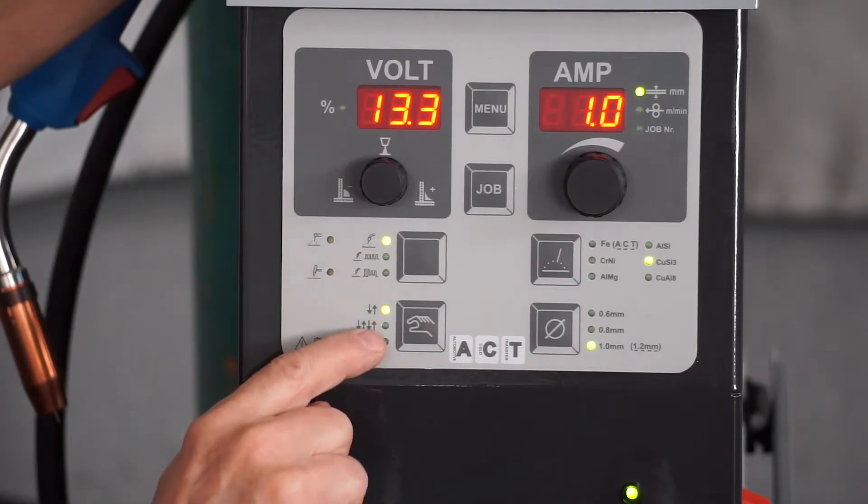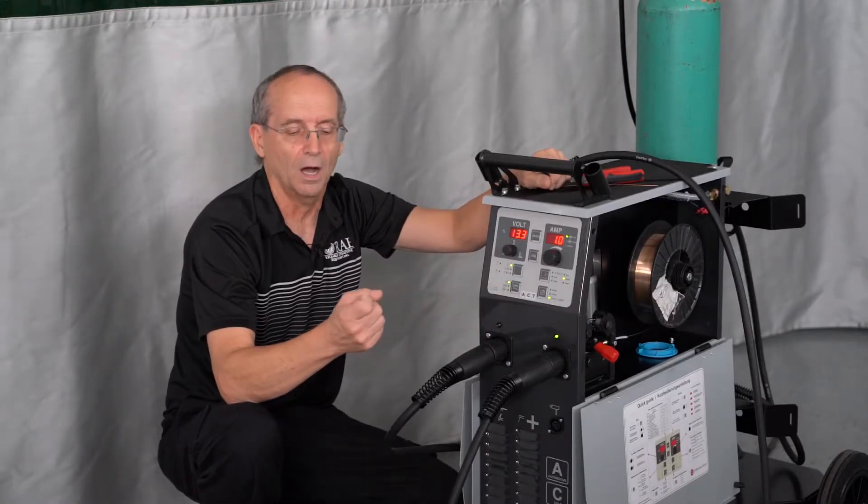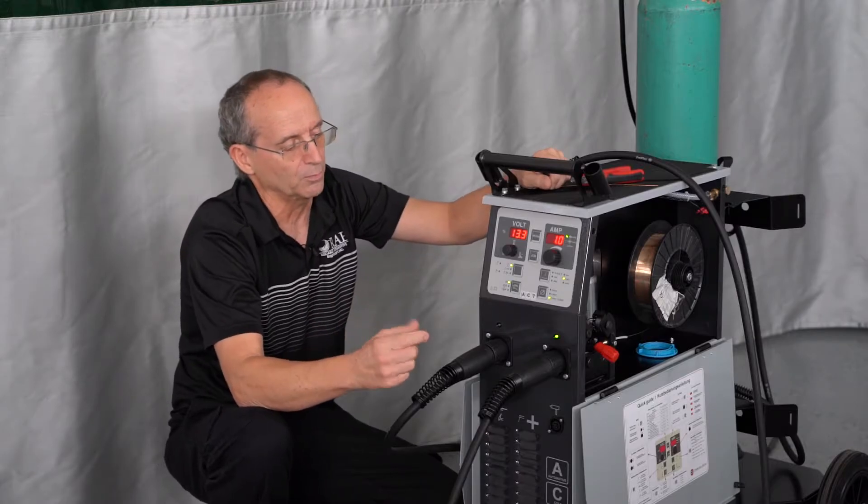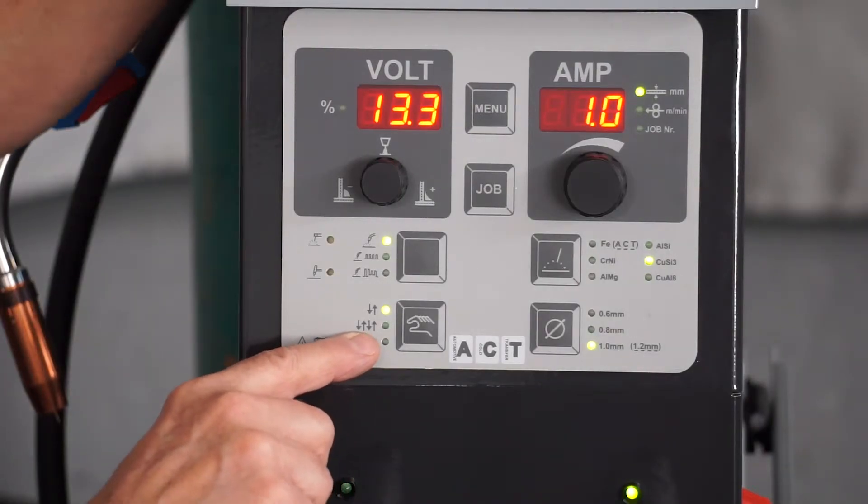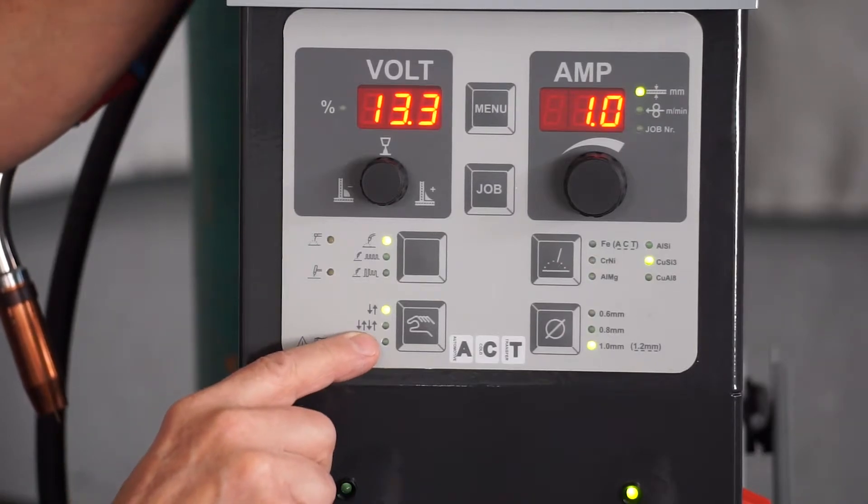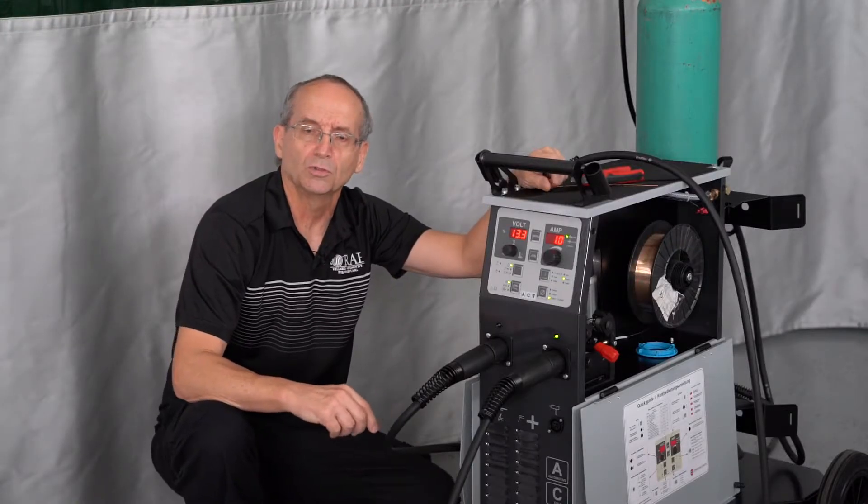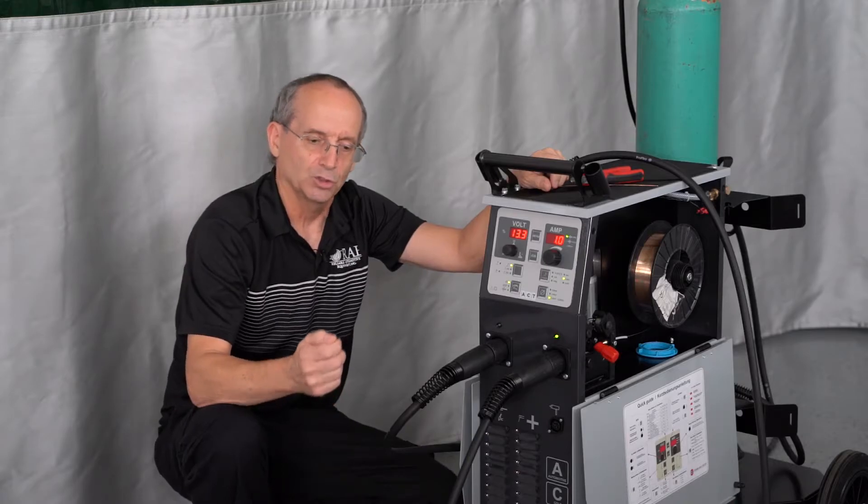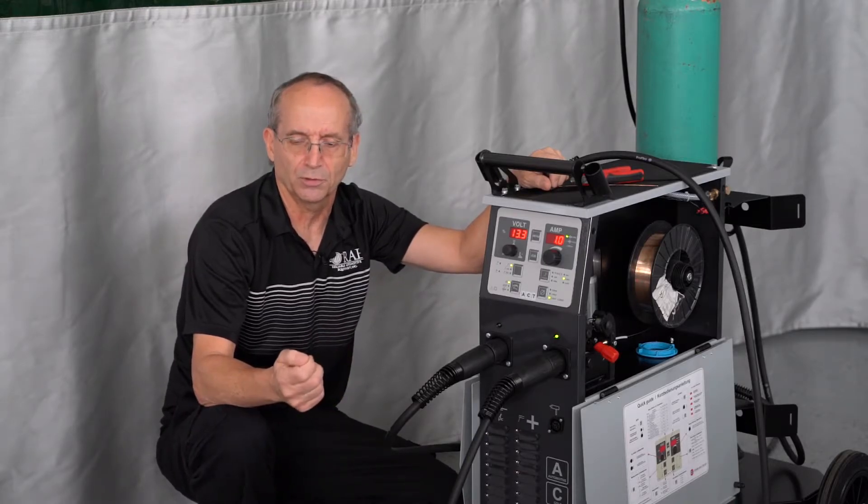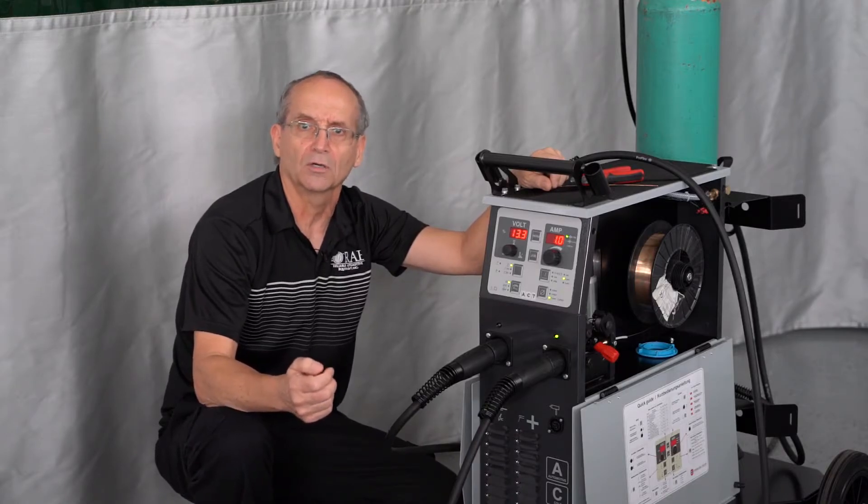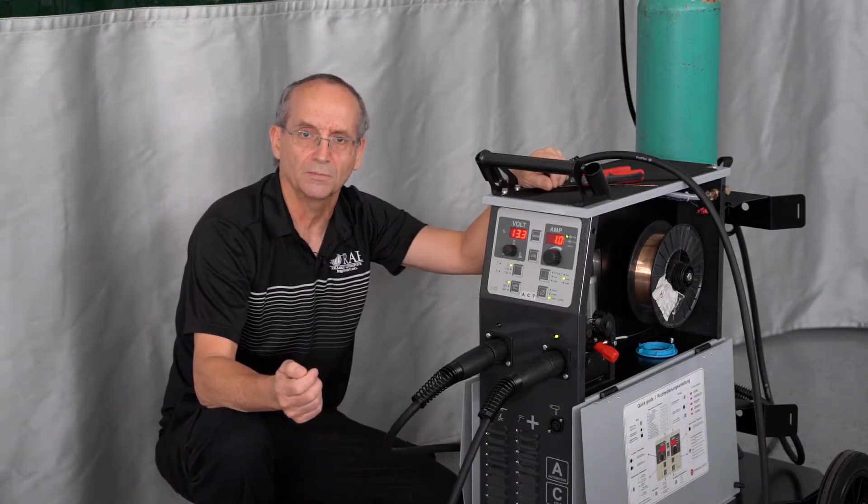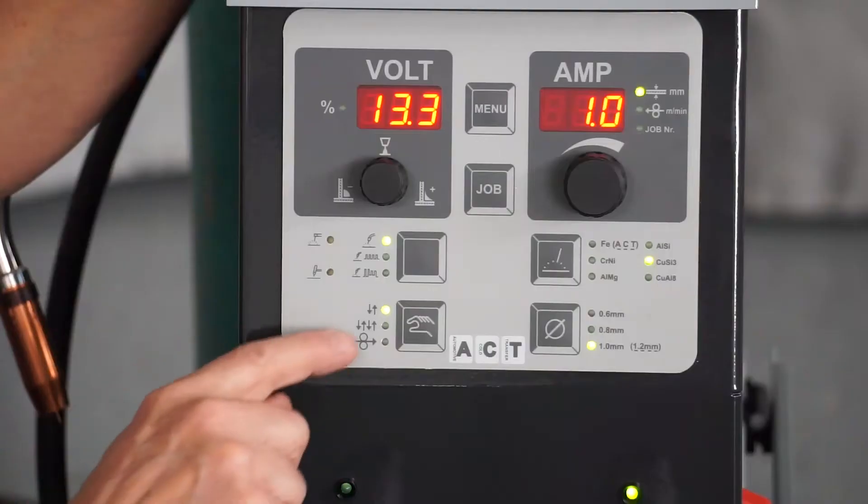The next one down is trigger control of the gun. We have two selections. The first one is two arrows up and down. That means the trigger is going to be on and off. It's very simple, just like a steel gun. The next set of four arrows is called a four step process. And that is used in aluminum because when you go to weld aluminum, it's too cold when you start. It gets up to temperature. Then at the end of the weld, it's too hot and you can't stop and start on an aluminum weld. It has to be a one-time deal.